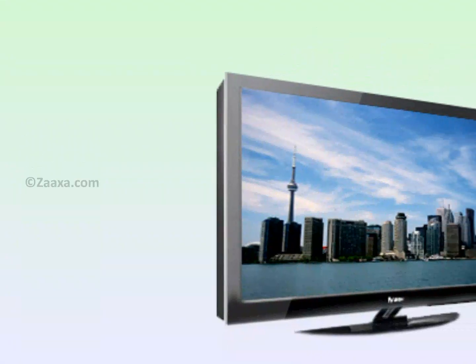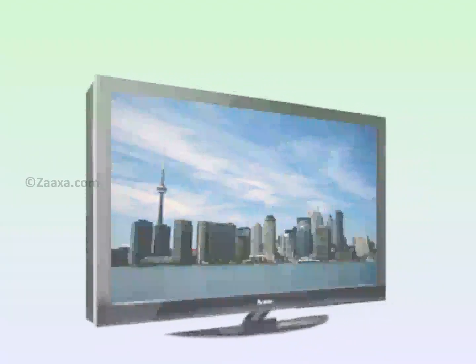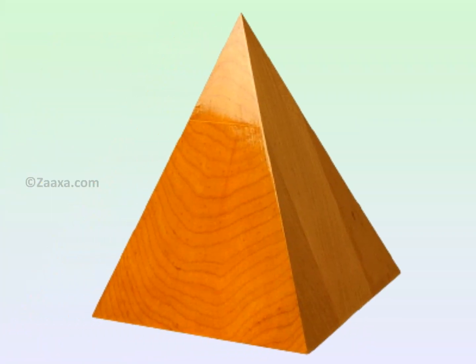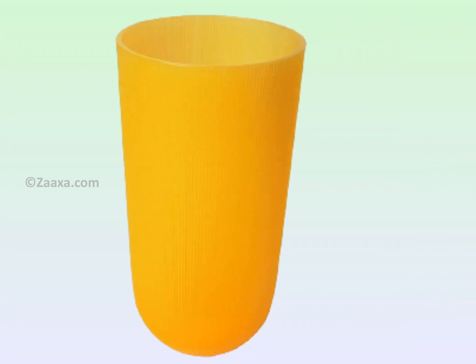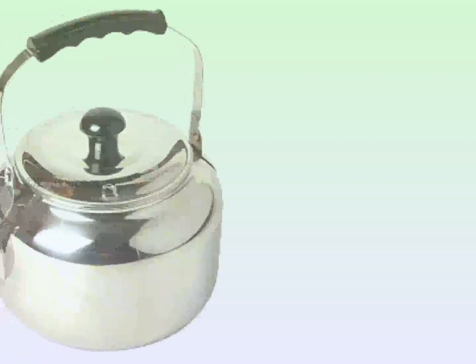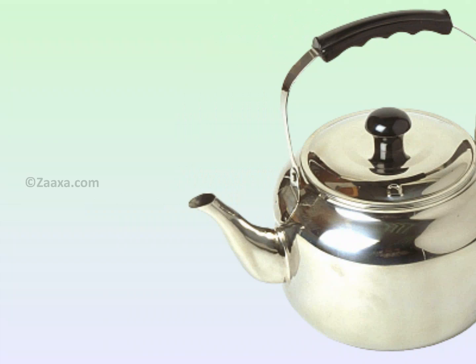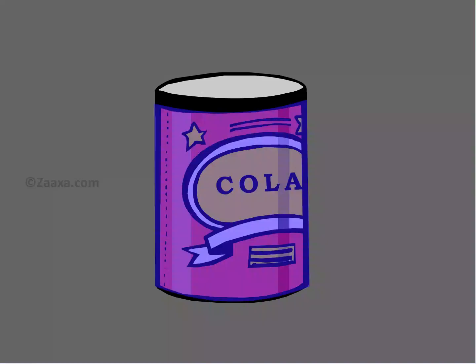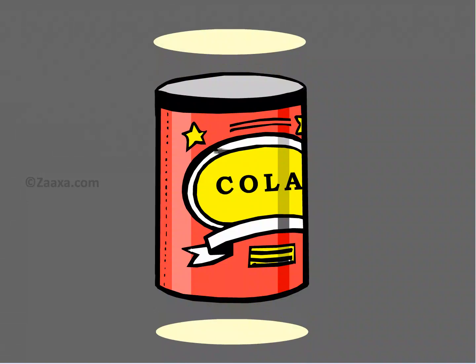We deal with several solids in our daily lives. They are of different sizes and shapes. While some solids are made up of flat surfaces, some are made up of curved surfaces, and some are a combination of flat and curved surfaces. This is a can of soft drink. It's made up of one curved surface and two flat surfaces.